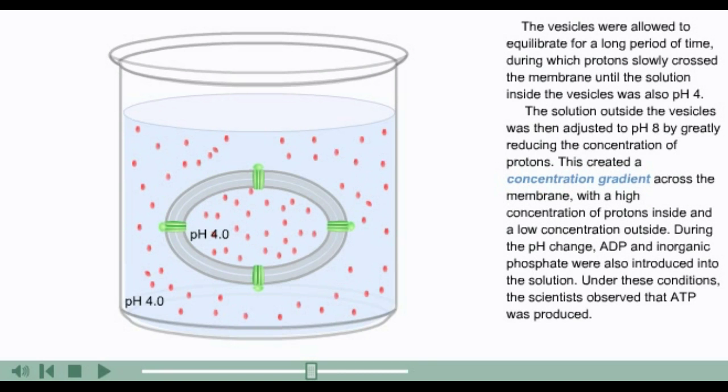The solution outside the vesicles was then adjusted to pH 8 by greatly reducing the concentration of protons. This created a concentration gradient across the membrane with a high concentration of protons inside and a low concentration outside. During the pH change, ADP and inorganic phosphate were also introduced into the solution. Under these conditions, the scientists observed that ATP was produced.